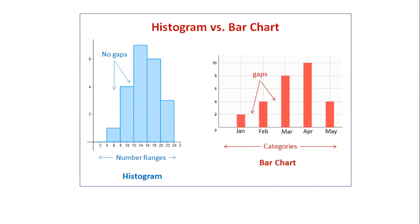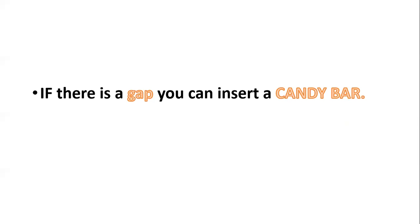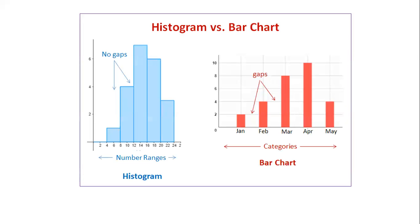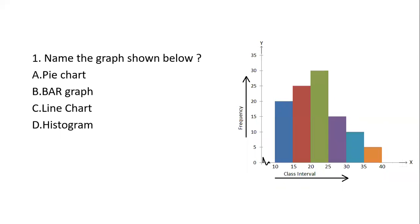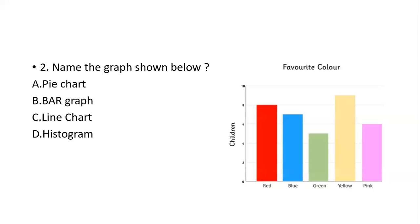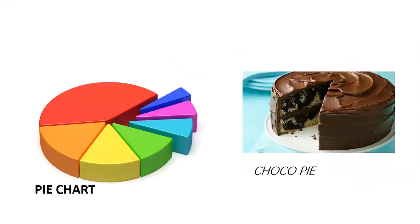If you forget in the exam, use this mnemonic: if there is a gap, you can insert a candy bar — or any iron bar, any rod or stick. So if you see a gap, remember it's a bar graph because you can insert a bar into that gap. If there is no gap, it's a histogram. Gap means bar graph, no gap means histogram.